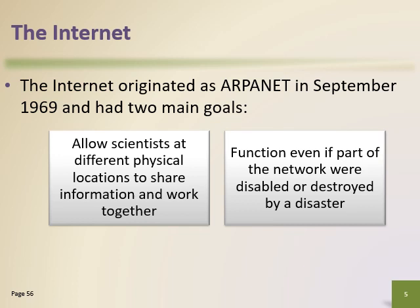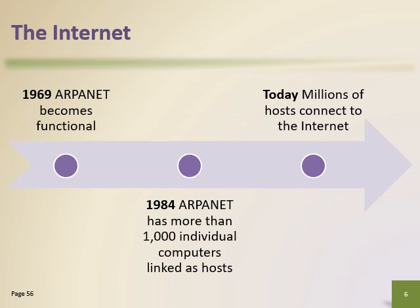ARPANET became functional in September 1969. Initially it was only used to link scientific and academic researchers across the United States, and it had only four nodes — four different computers located at different parts of the USA. These computers served as hosts at different locations, providing services and connections on the network. These four hosts communicated together using high-speed internet to transfer data and messages over the network.